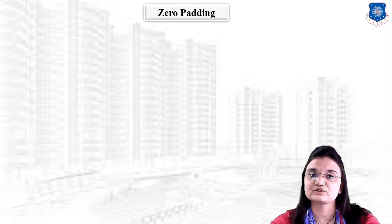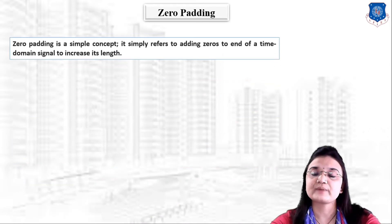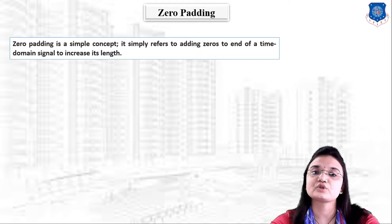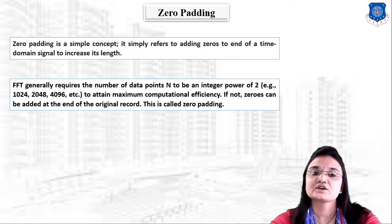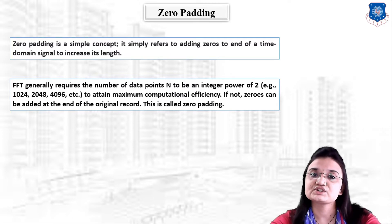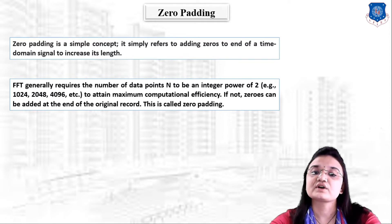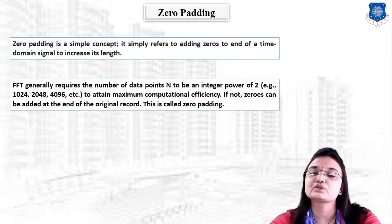Now let us understand zero padding. Zero padding simply refers to adding zeros to the end of a time domain signal to increase its length. The FFT generally requires the number of data points N to be an integer power of 2 to attain maximum computational efficiency.